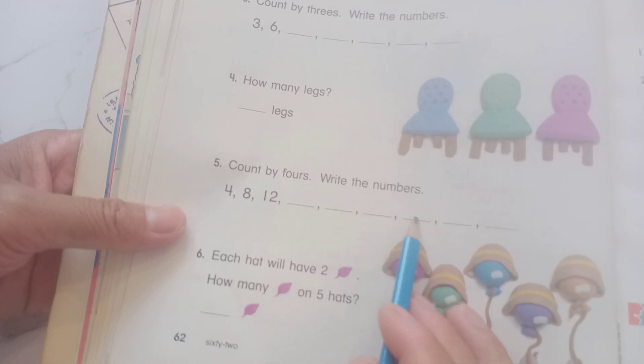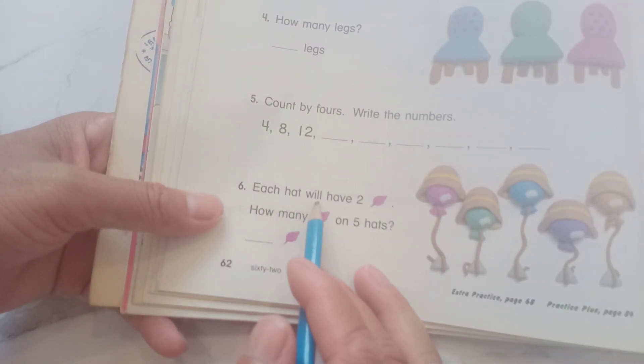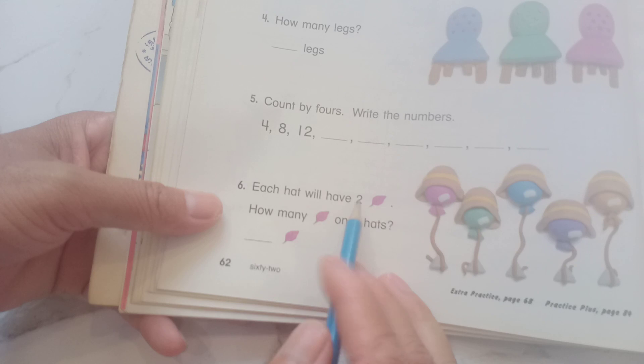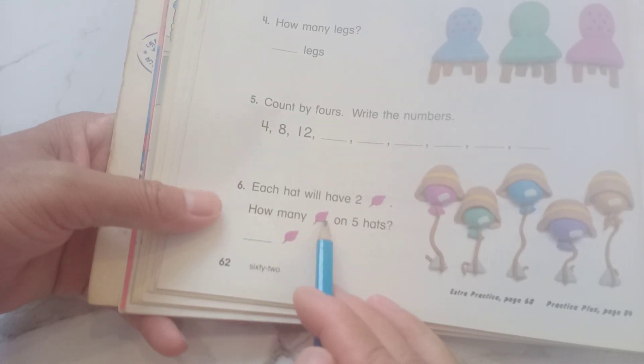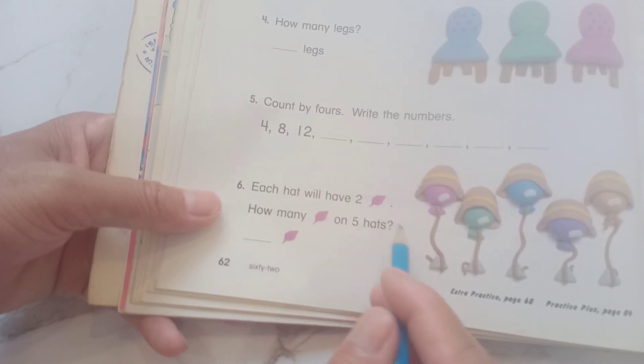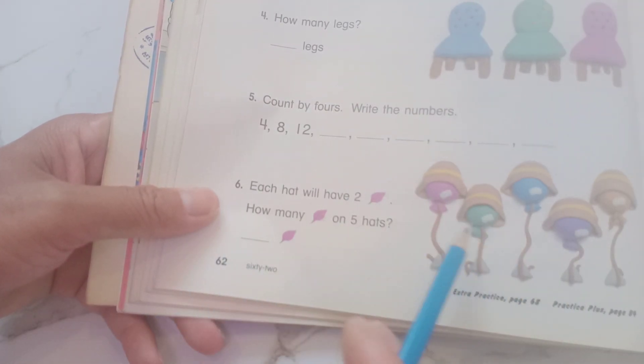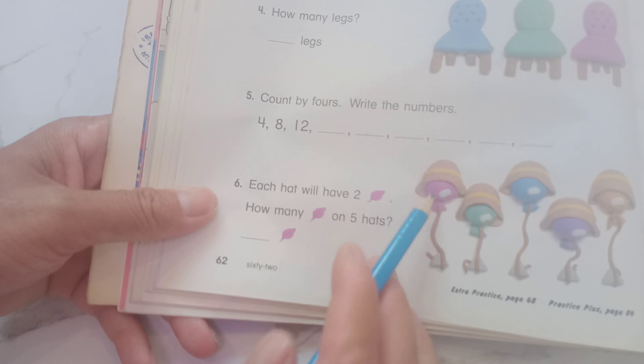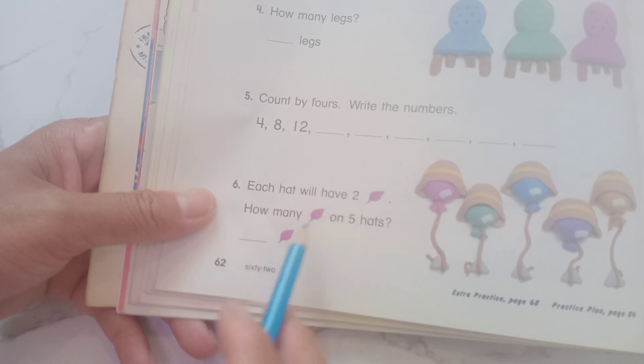So now six: each hat will have two. How many on five hats? Each hat has two, only one.